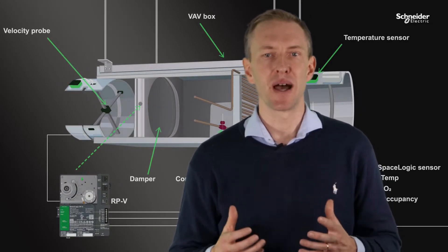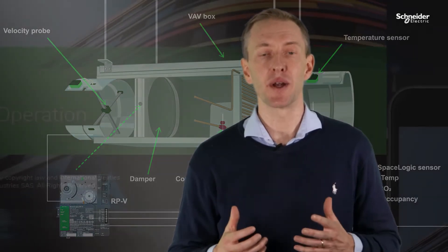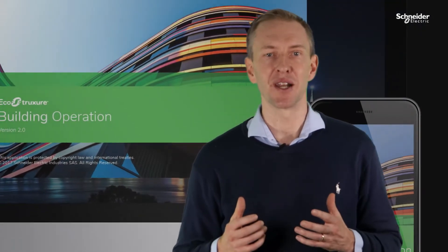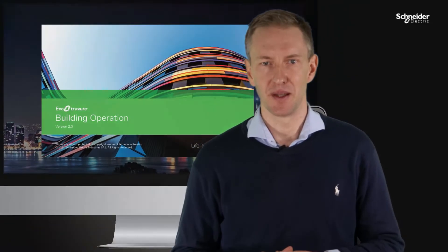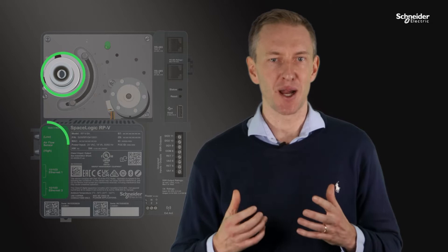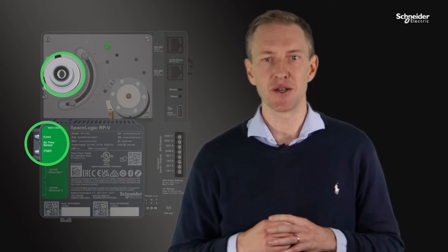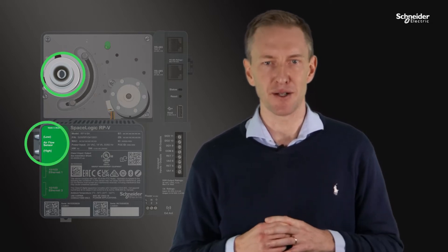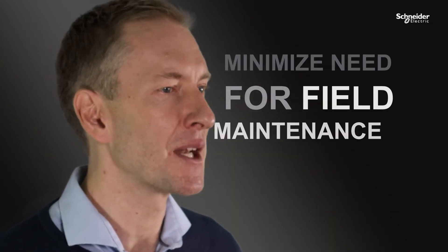It can be expanded with light and blind integrated all together into ecostructure building operation. It has a built-in damper actuator, a new type of airflow sensor that can measure down to low airflow levels. All this will minimize the need for field maintenance work.